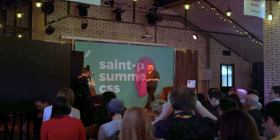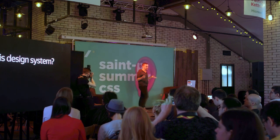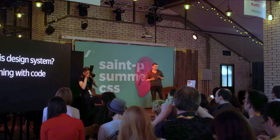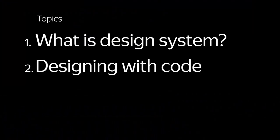My presentation consists of three main parts. At the start, we will discuss what a design system is — this is a very broad concept. After that, I will tell you why code is the best tool for a designer to work with a design system. And at the end, I will briefly show you some tools we used and developed. So, what is a design system?